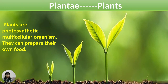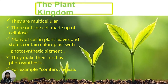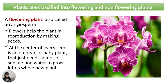Plants: Plants are photosynthetic multicellular organisms that can prepare their own food. Their cells are made up of cellulose. Many plant cells in leaves and stems contain chloroplasts with photosynthetic pigments. Plants make their food by photosynthesis. Plants are classified into flowering and non-flowering plants. A flowering plant, also called an angiosperm, uses flowers to help in reproduction by making seeds. At the center of every seed is an embryo, or baby plant, that just needs soil, sun, air, and water to grow into a new plant.